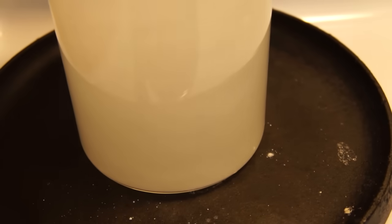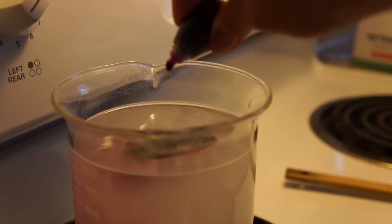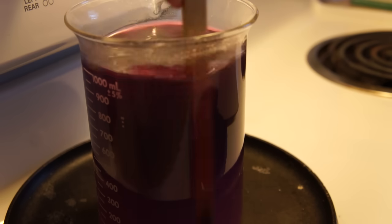So once your solution is supersaturated, then you can add your dye if you like. I'm just using regular old food coloring. And for the first crystal I did, I added about 20 drops of the purple neon food coloring.